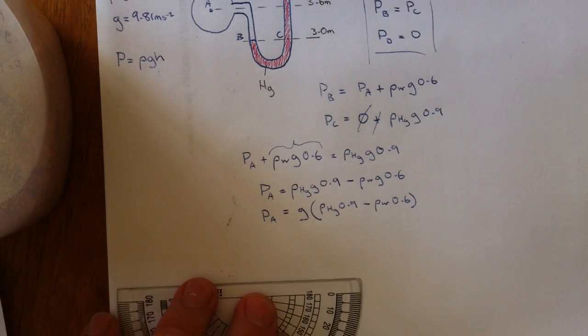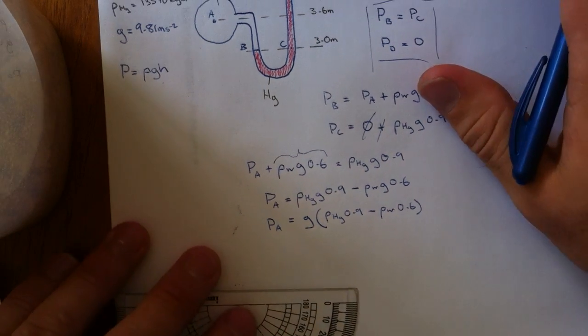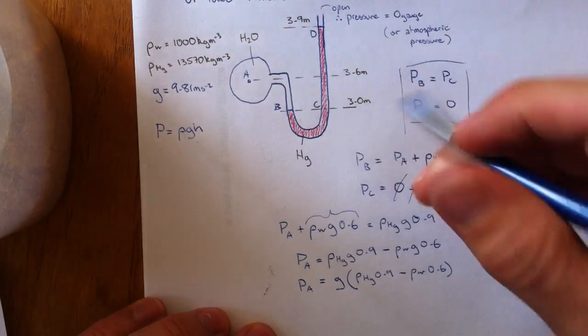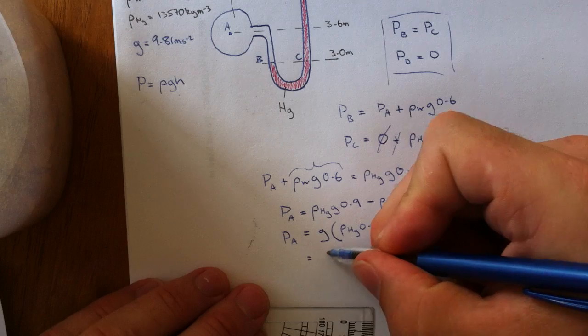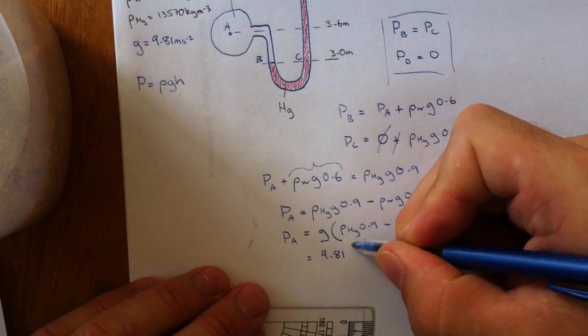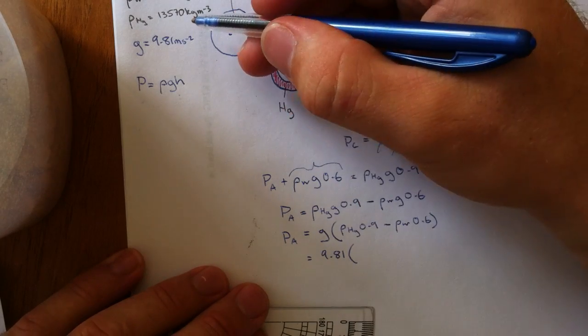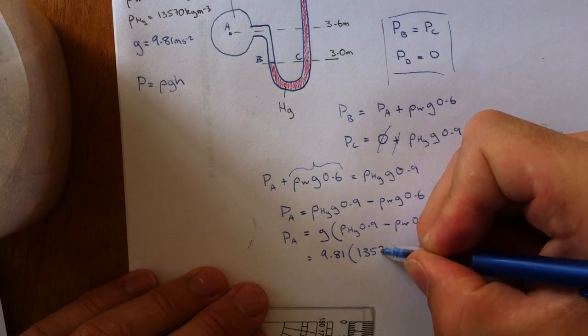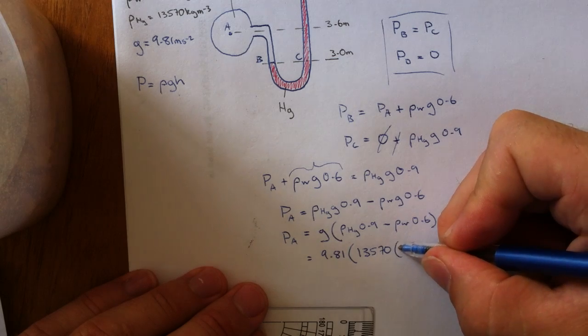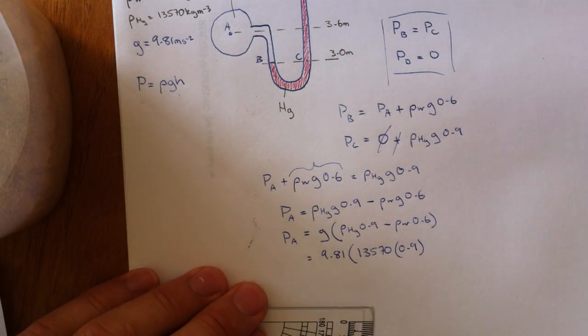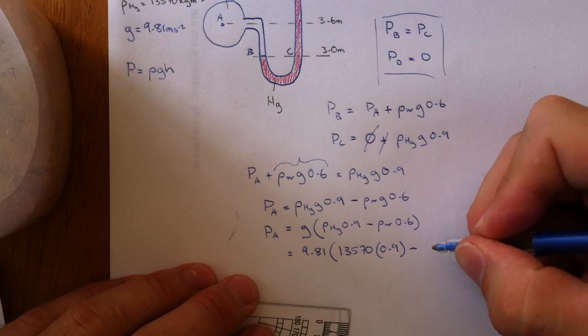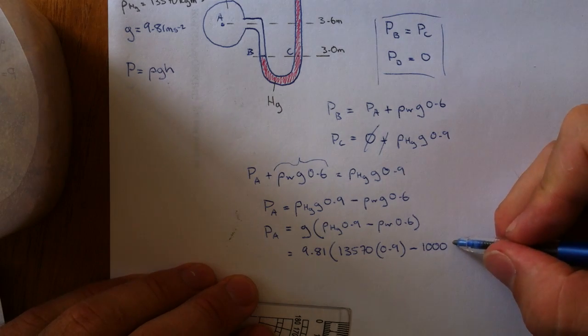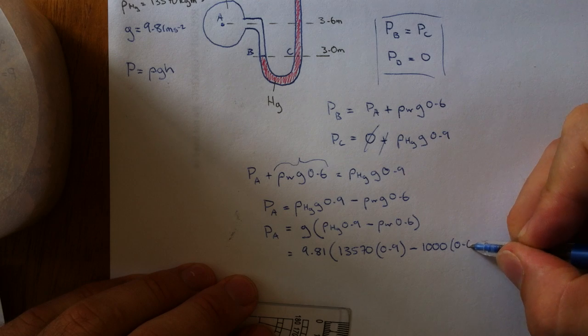Now we'll start tossing a few figures in here. G, 9.81 times density mercury, 13,570 kg per cubic meter times 0.9 minus density water, 1000 kg per cubic meter times 0.6.